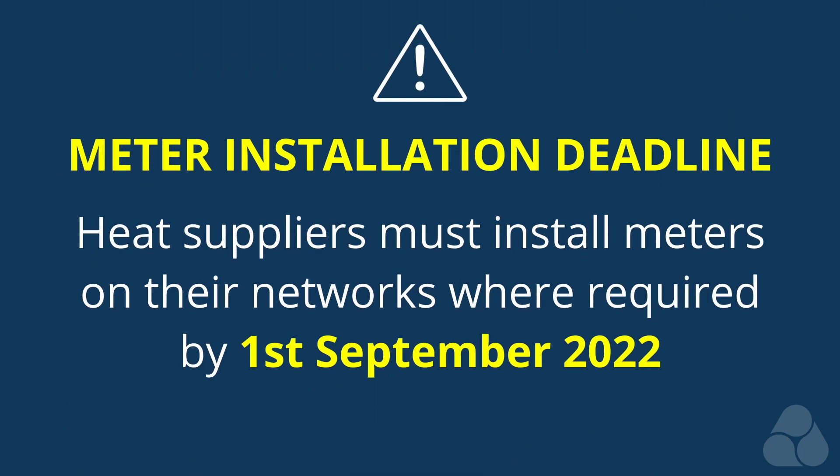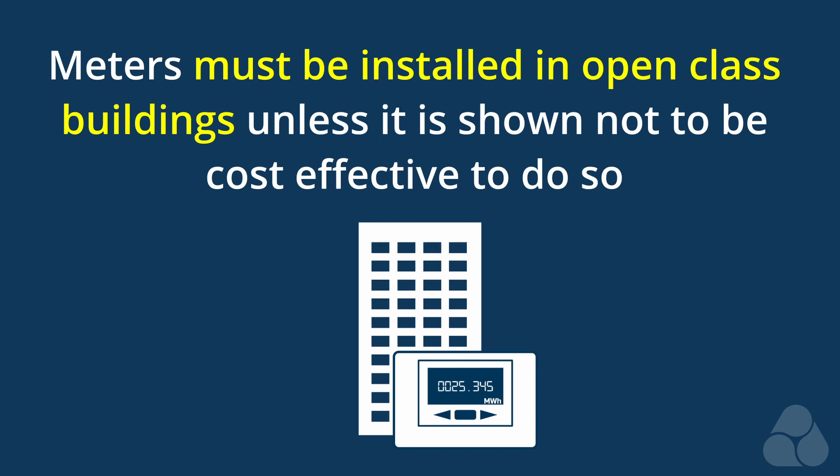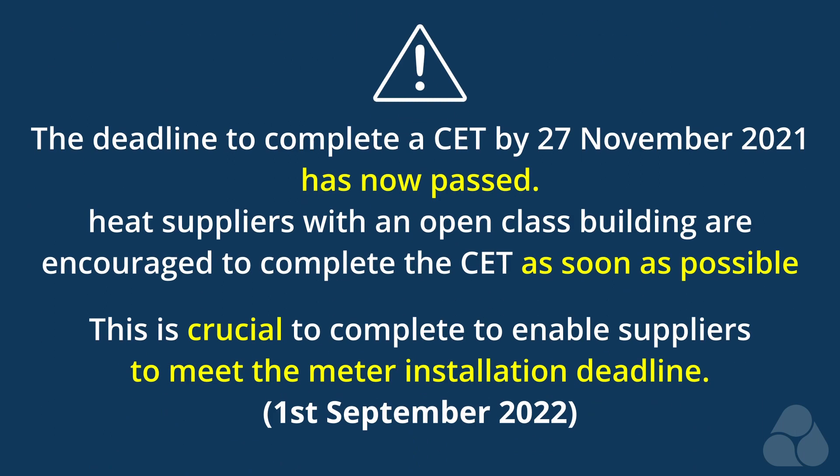Heat suppliers are required to install meters on their networks where required by the 1st of September 2022. If a building is in the open class, a meter must be installed unless it is shown not to be cost-effective to do so. The deadline to complete a CET by the 27th of November 2021 has now passed. As such, heat suppliers with an open-class building that have not yet done so are encouraged to complete the CET as soon as possible to enable them to meet the meter installation deadline.